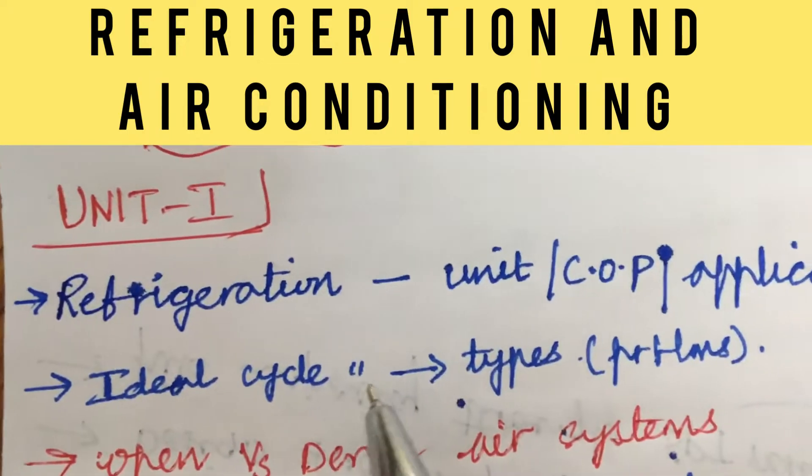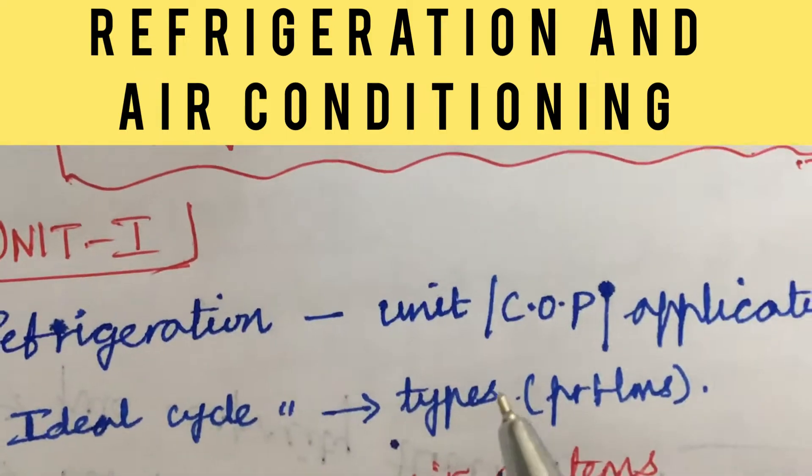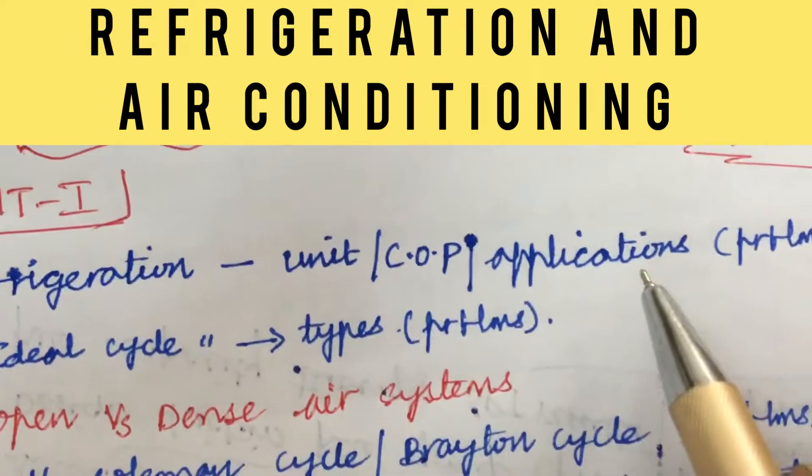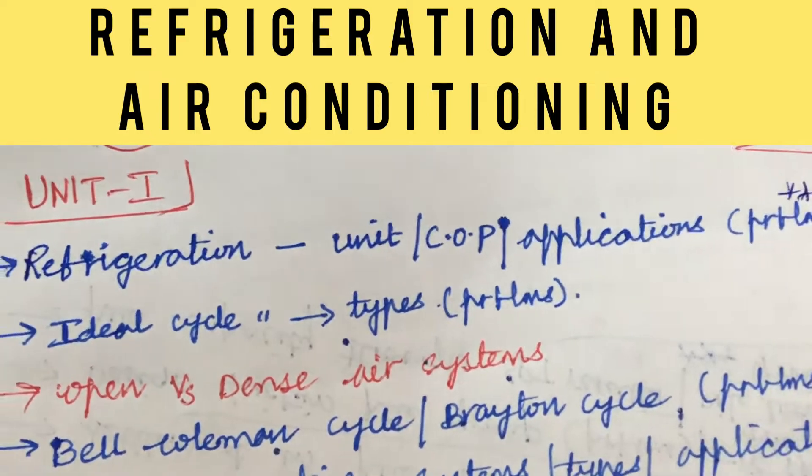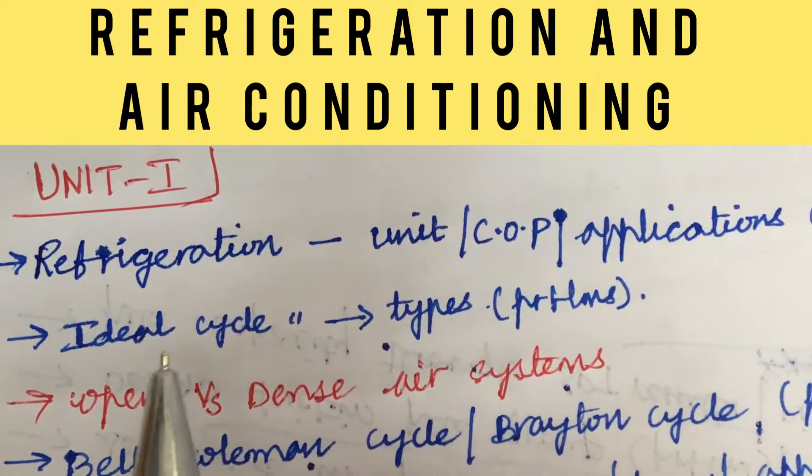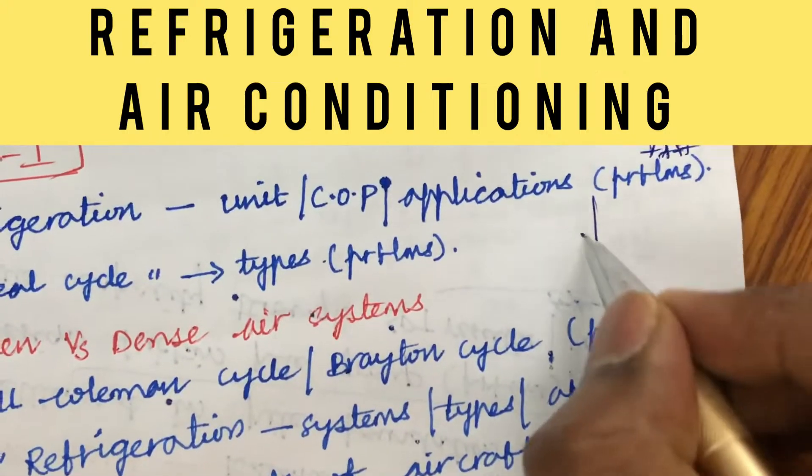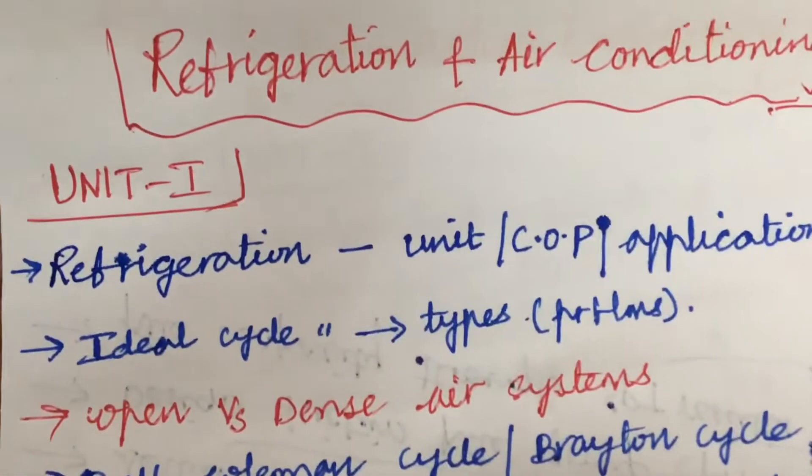Let us look at unit one. Unit one is all about refrigeration. There may be questions like define ton of refrigeration or its unit or COP as well as the applications and the problems related to it. This may be one of the gunshot question. Later, the ideal cycle refrigeration and its types and the problems related to it. These two concepts I am expecting 1A as well as 1B for this time in your question paper.